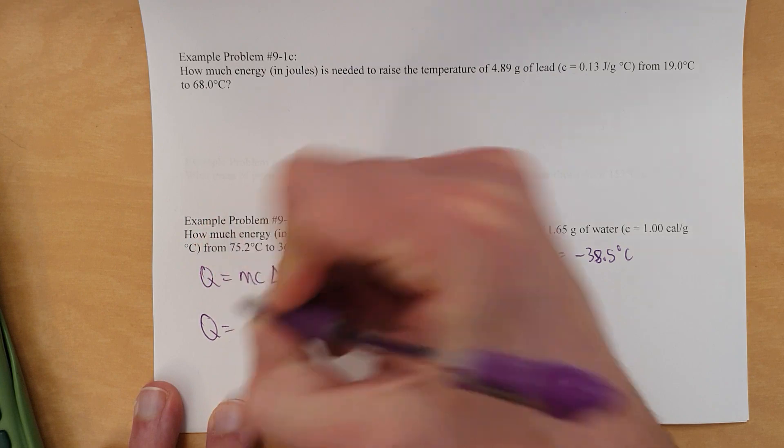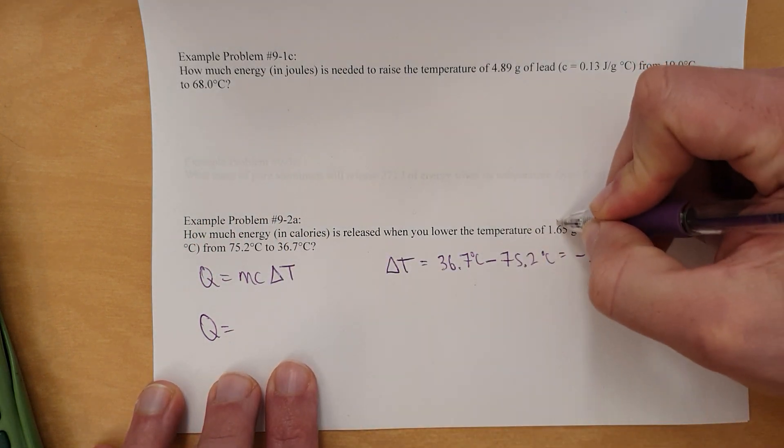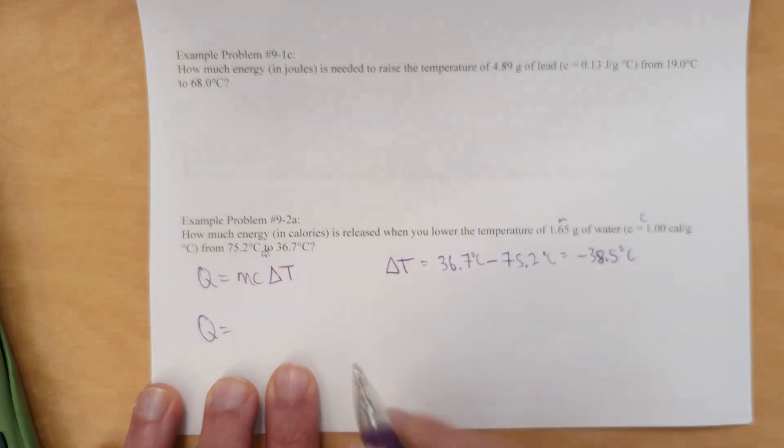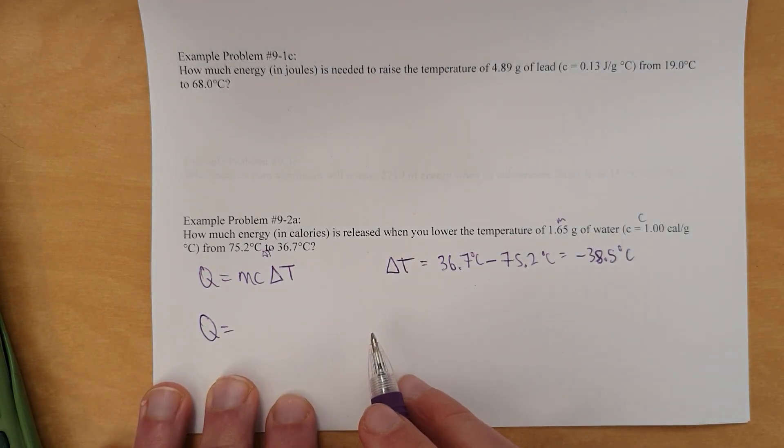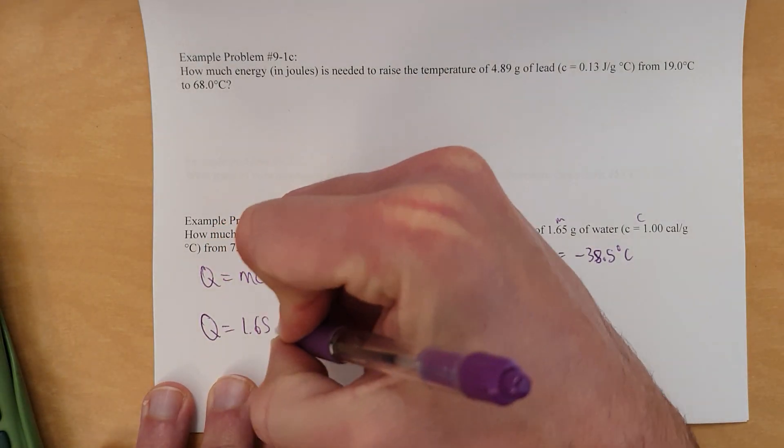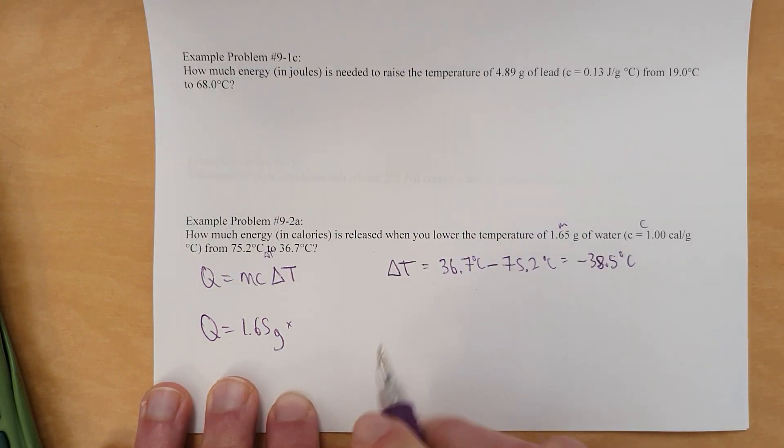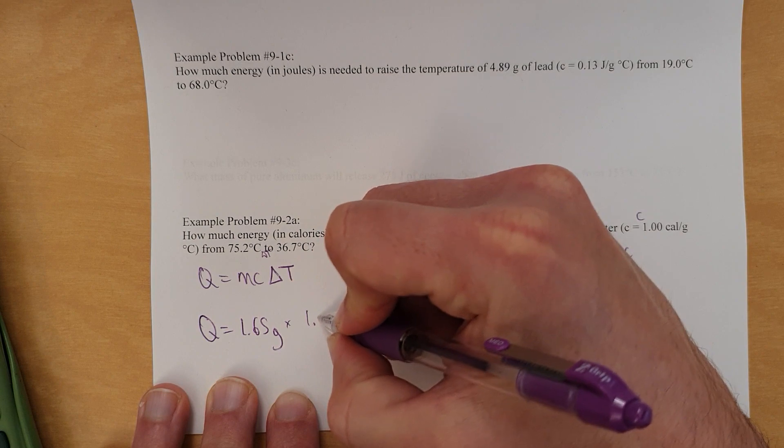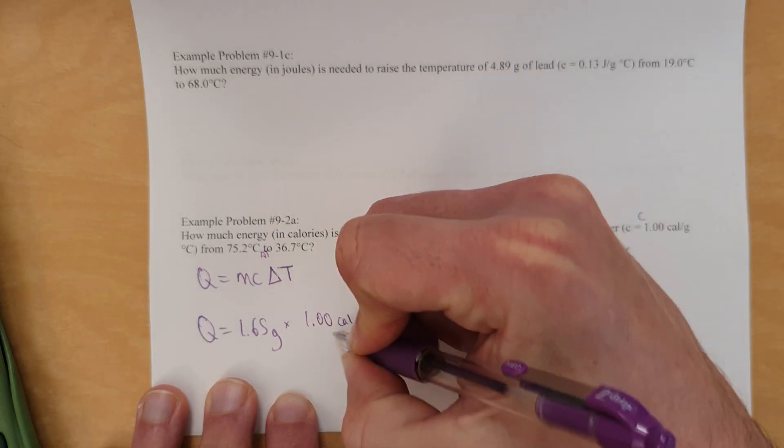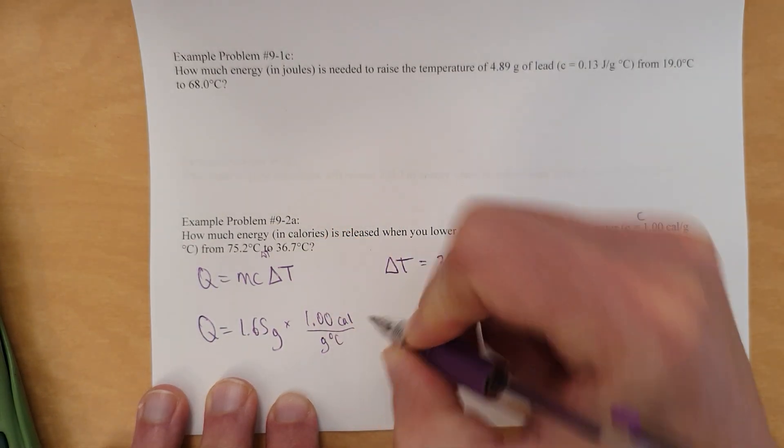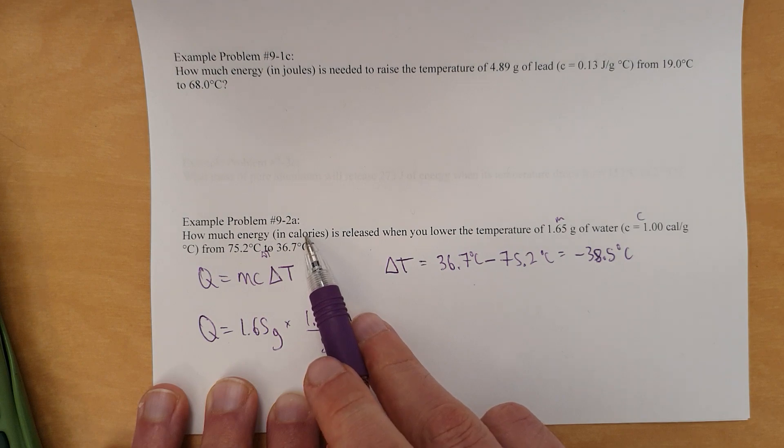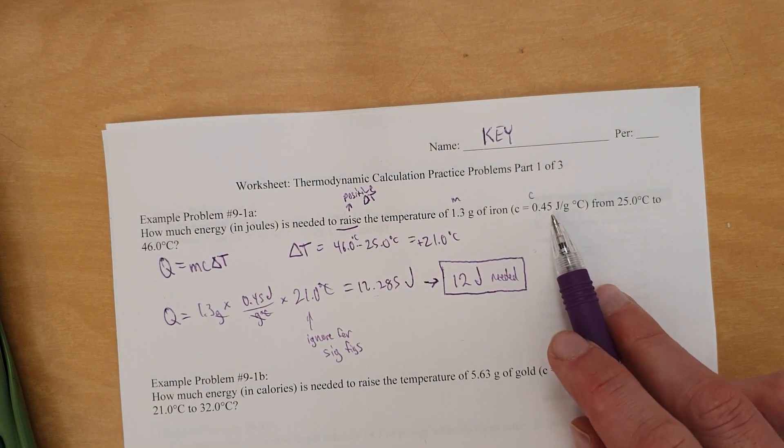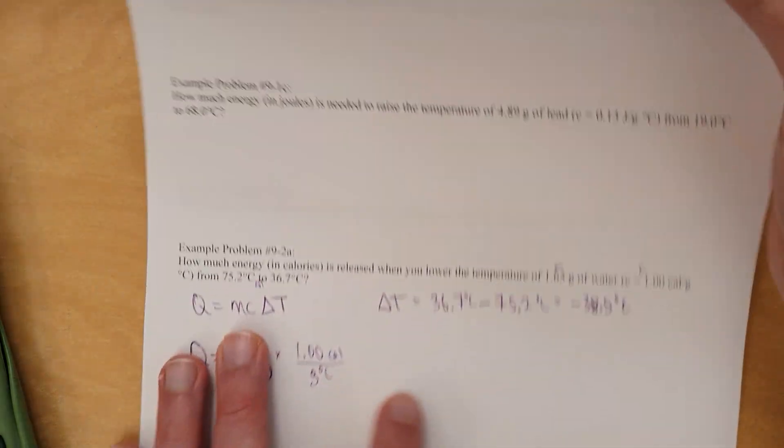So Q equals the mass. Where's our mass? It's right here. There's our specific capacity, and our delta T comes from this. So, all right, we've got what we need. So, 1.65 grams times specific heat capacity, 1.00 calories per gram degree Celsius. It's asking for calories, by the way, so make sure you use a specific heat capacity that has calories. If you used one that had joules, such as this one here, you would be very, very wrong.